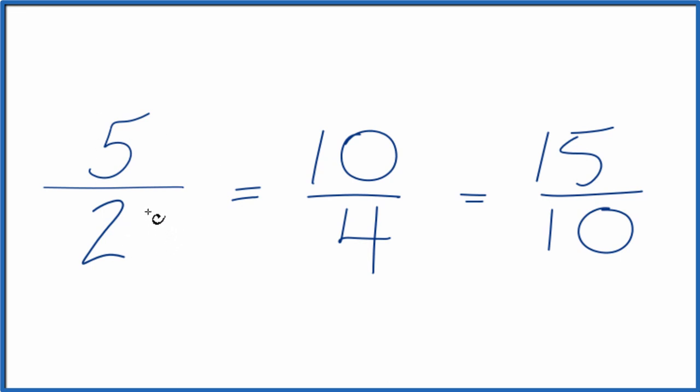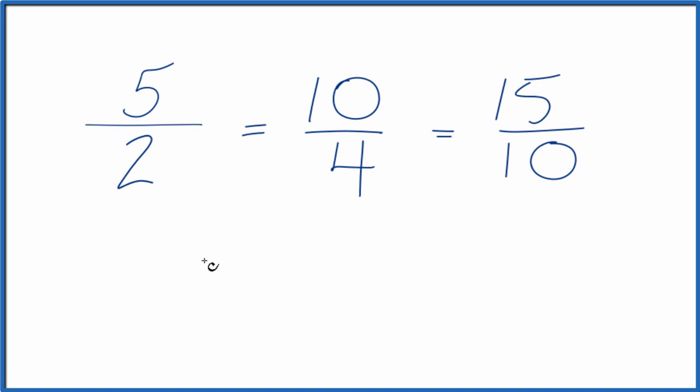5 over 2 is an improper fraction by the numerator. It's larger than the denominator here. So we could convert this to a mixed number. 2 goes into 5 two times. 2 times 2 is 4 with 1 left over. And then we just bring the denominator across.